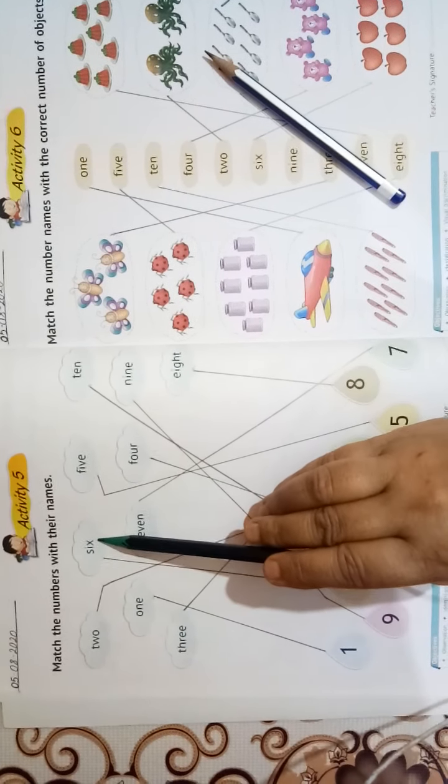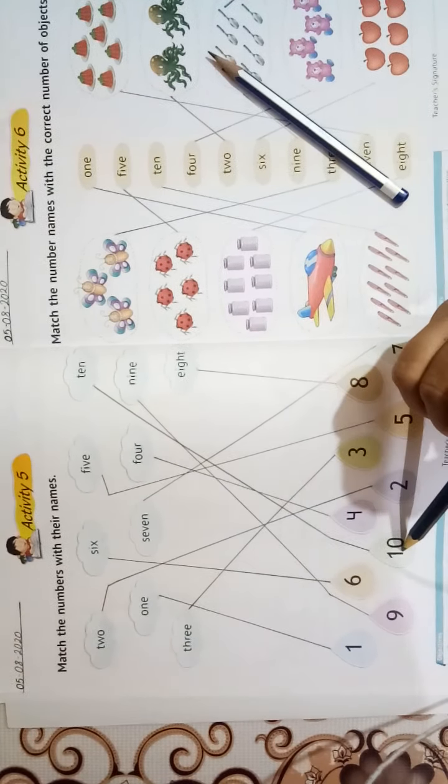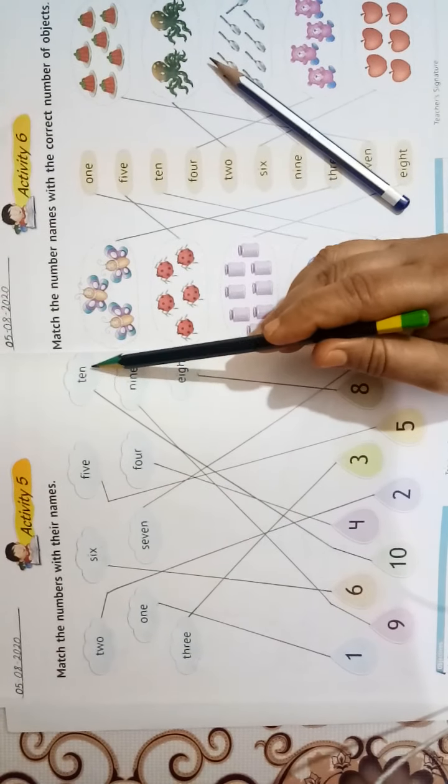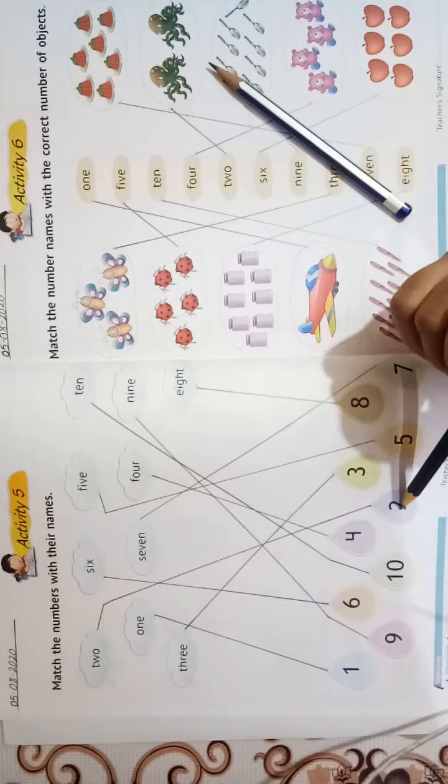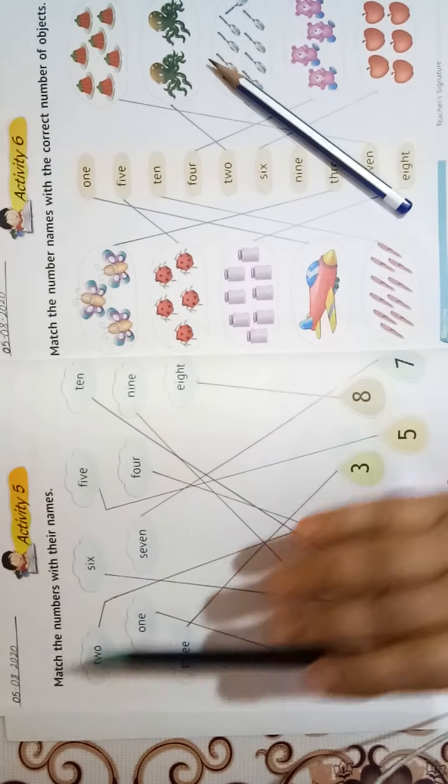Number 6 with S-I-X 6. Number 10 with T-E-N 10. Number 4 with F-O-U-R 4. Number 2 with T-W-O 2.